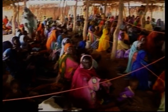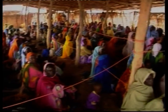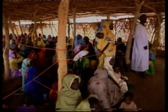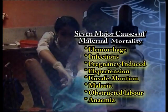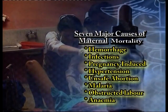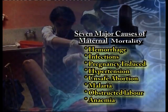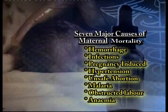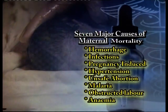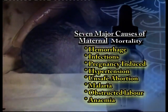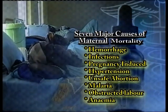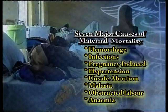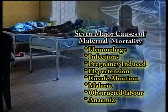But first, let's gain a better understanding of this problem. Maternal mortality has seven major causes: hemorrhage, infections, pregnancy-induced hypertension, unsafe abortion, malaria, obstructed labour, and anaemia.